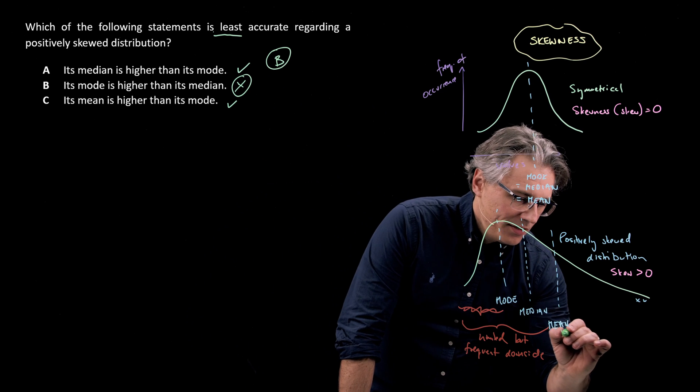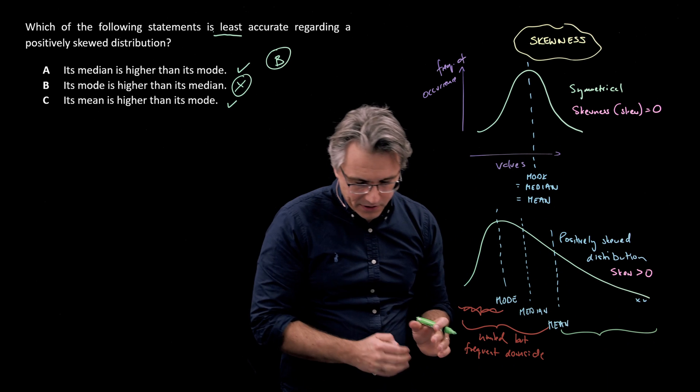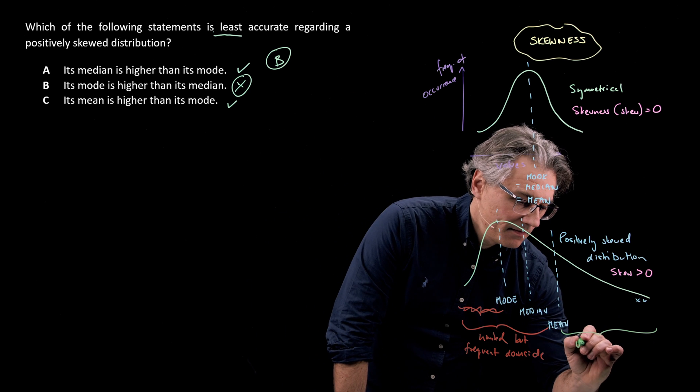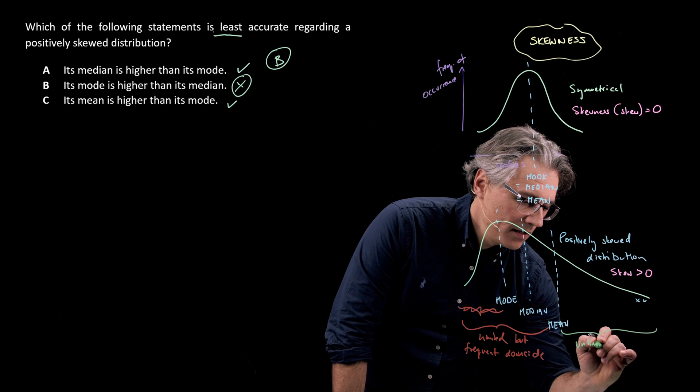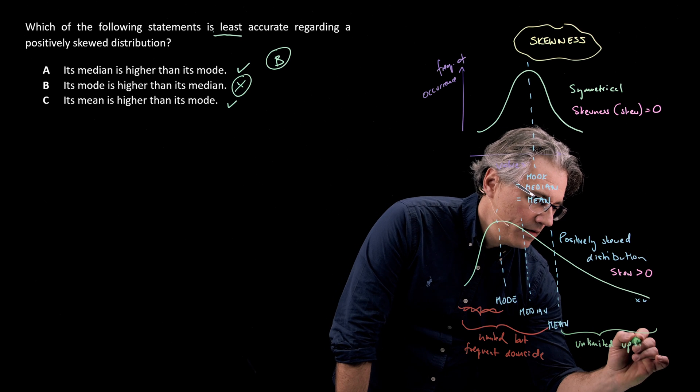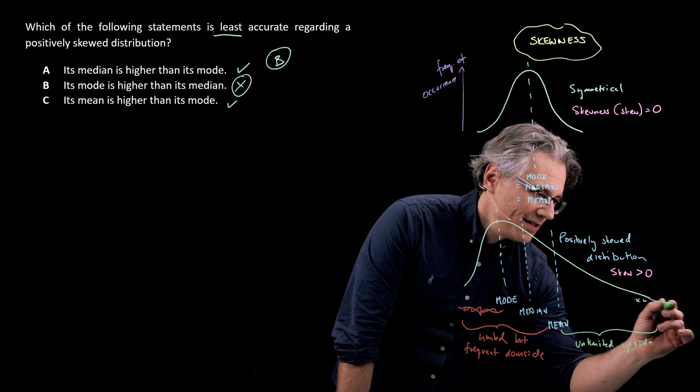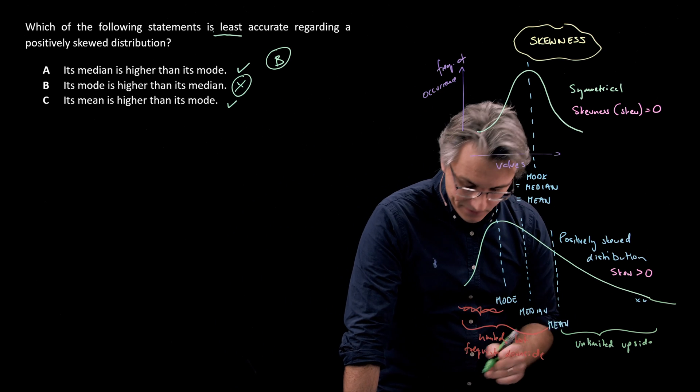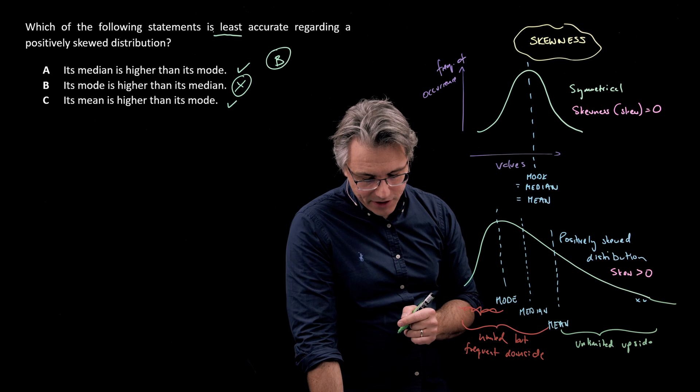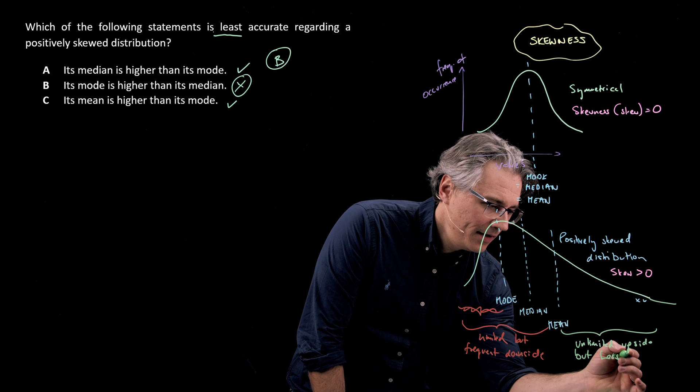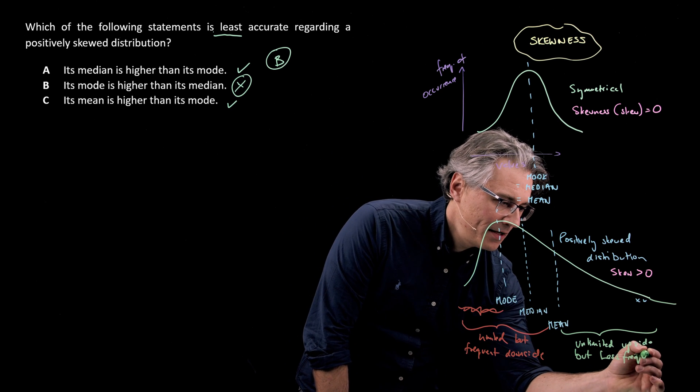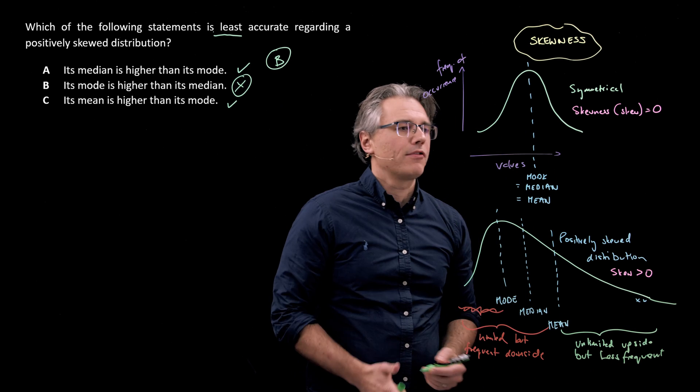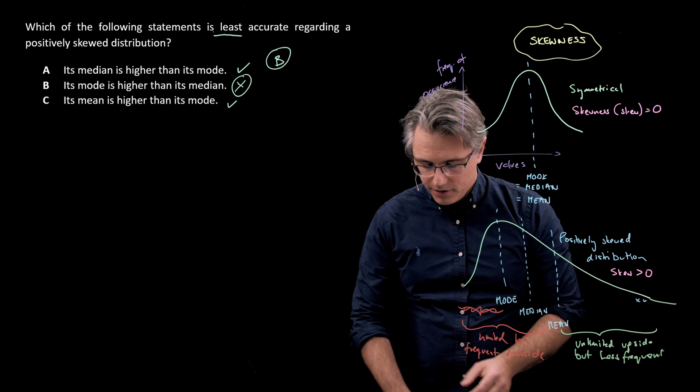However, to the right of the mean you've got potentially unlimited, so high unlimited upside. So the potential for results which are significantly higher than the mean is quite big. However, they're not so frequent but less frequent. And that's one thing you may be asked about - these conclusions coming from the fact that you're presented with one or the other distribution.